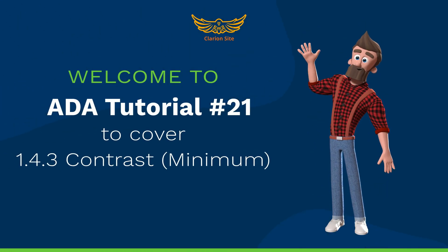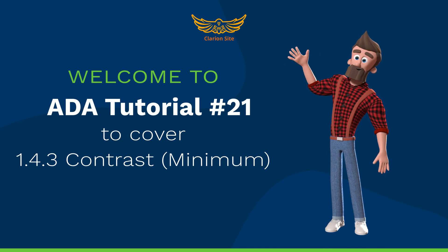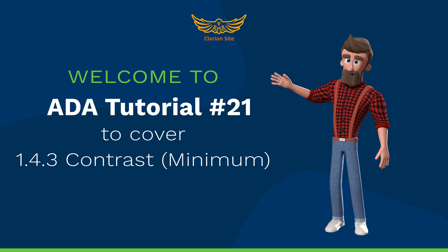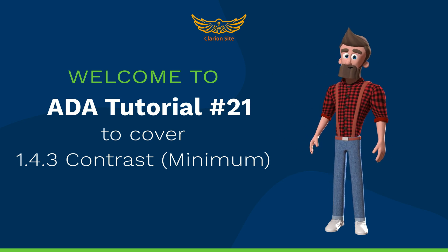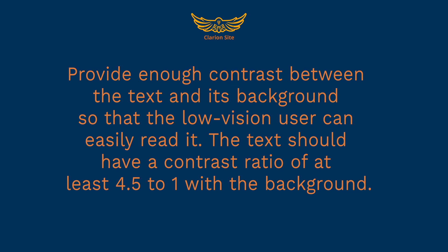Welcome to ADA tutorial number 21, covering WCAG success criterion 1.4.3, contrast minimum. Provide enough contrast between the text and its background so that low vision users can easily read it. The text should have a contrast ratio of at least 4.5 to 1 with the background.